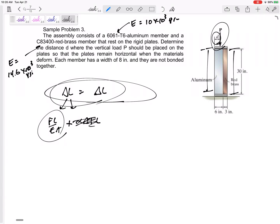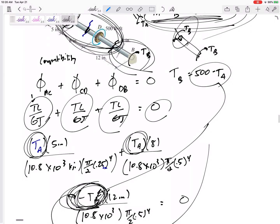Sometimes, like this one, the delta L's might be equal to each other. Sometimes, like this one, the compatibility might add up to zero. Sometimes, it adds up to a gap. There could be a lot of different things that it could be. You just need to ask yourself, what kind of sentence could I say that will be my compatibility?